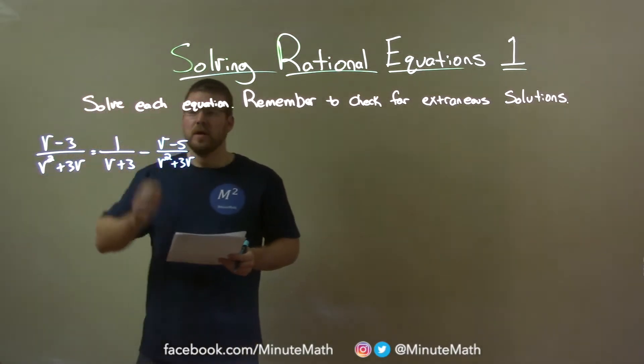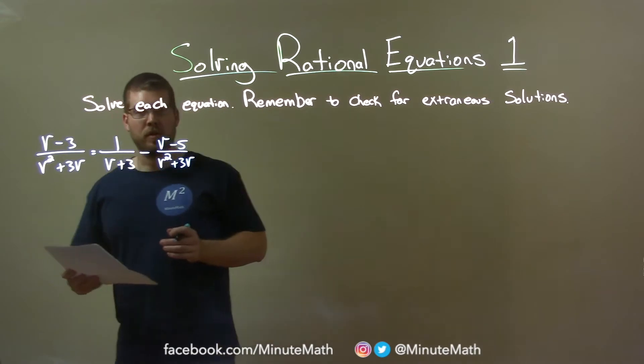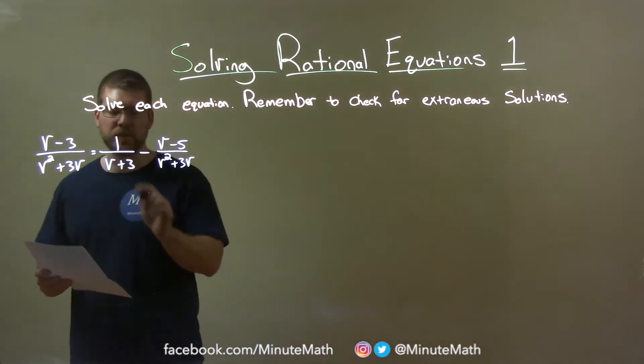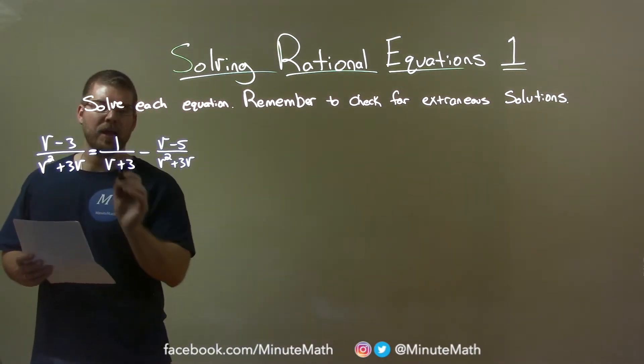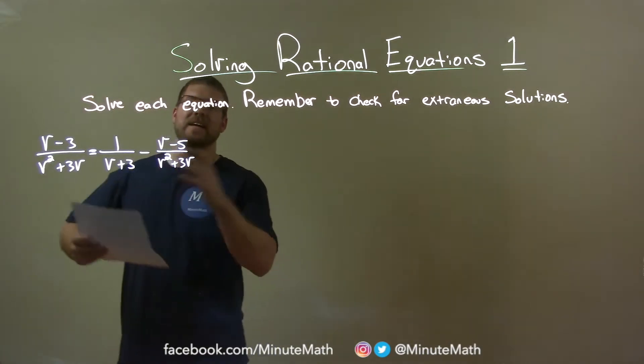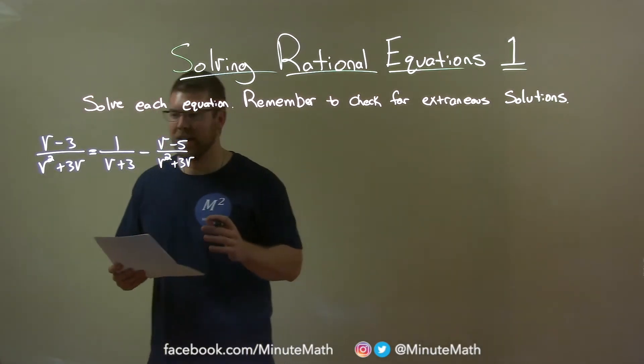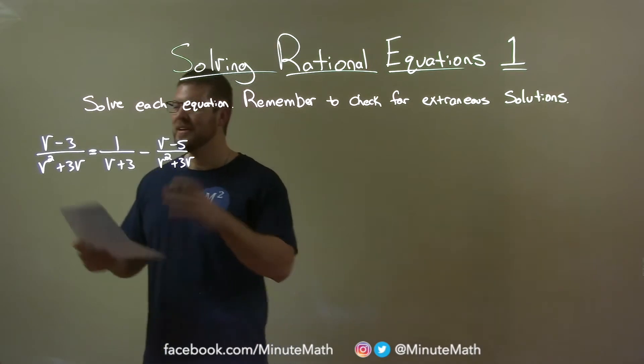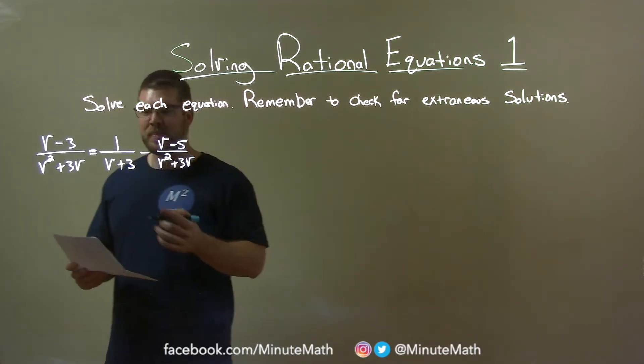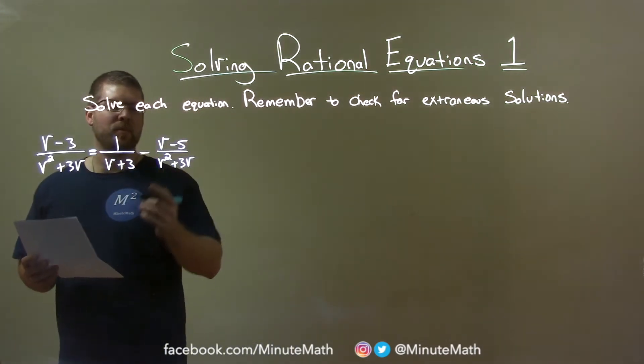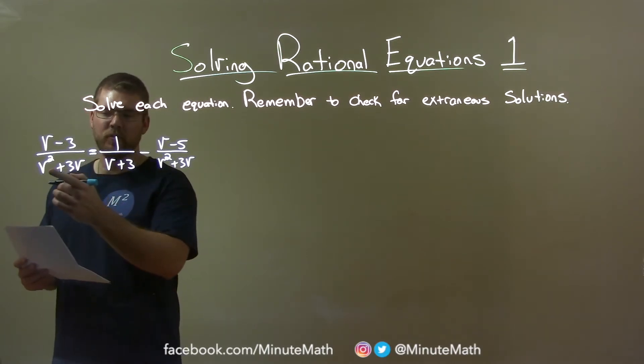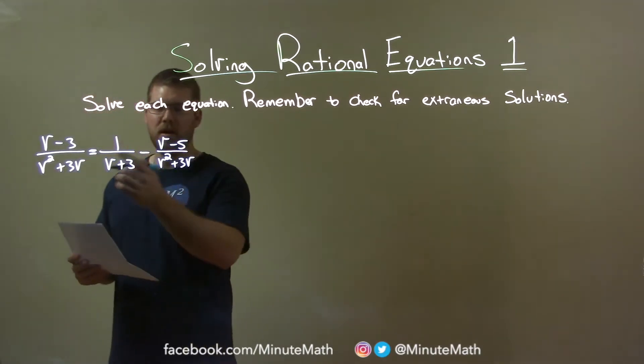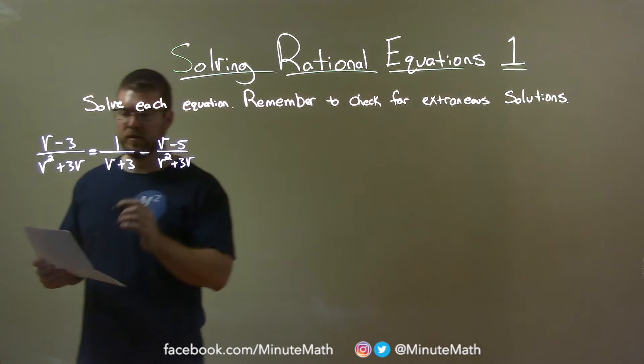Now, one thing I want to do is make sure all the denominators are the same. Now they're pretty close, but when they all are the same, we then can find a lighter and add them together and it helps simplify easier. So we have v plus 3 here and v squared plus 3v. If I pull out a v in the v squared plus 3v, I have a v plus 3 inside. So let's do that.